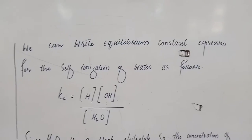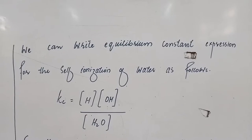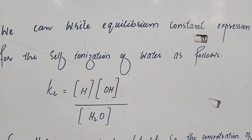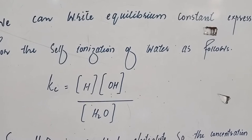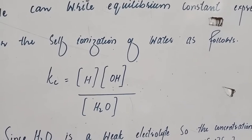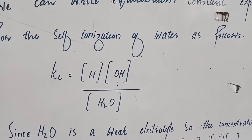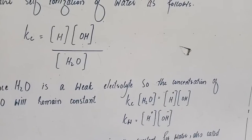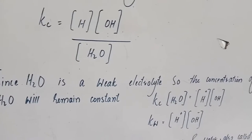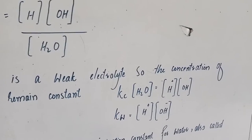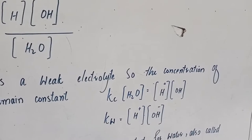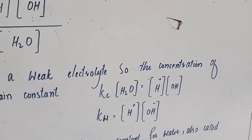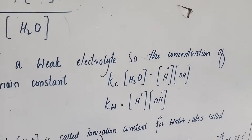We can write the equilibrium constant expression for the self-ionization of water as follows: Kc equals concentration of H⁺ multiplied by concentration of OH⁻, divided by concentration of water. Since water is a weak electrolyte, the concentration of H₂O remains constant, so we can write: Kc × [H₂O] equals [H⁺][OH⁻].